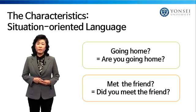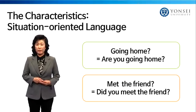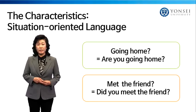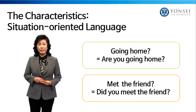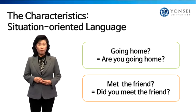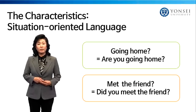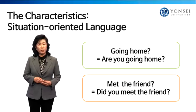Another characteristic of the Korean language is that it is a situation-oriented language. This means that in specific contexts or situations, certain components such as the subject of a sentence can be omitted. For example, 'going home' means 'are you going home?' In Korean, when you ask 'did you meet the friend,' you can skip 'you' and simply say 'met the friend?'